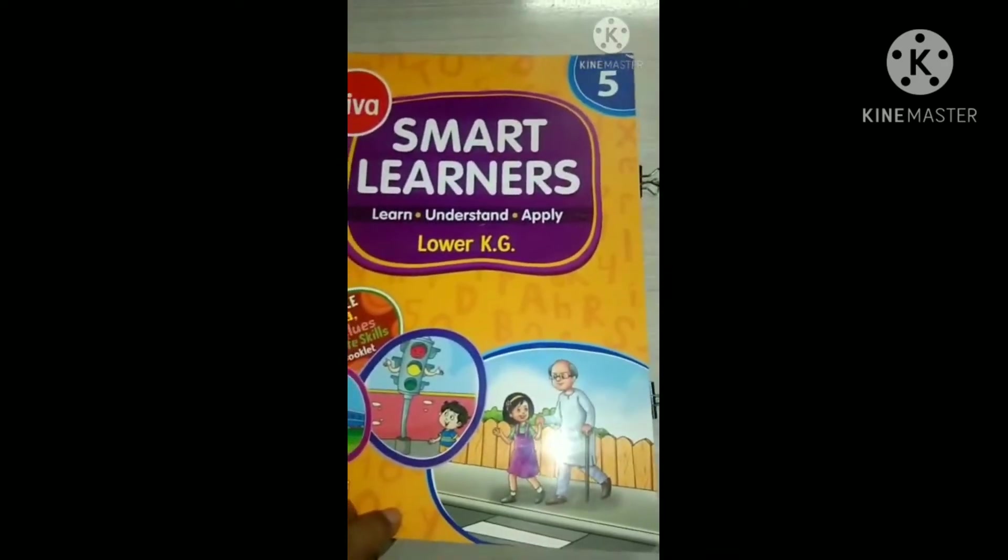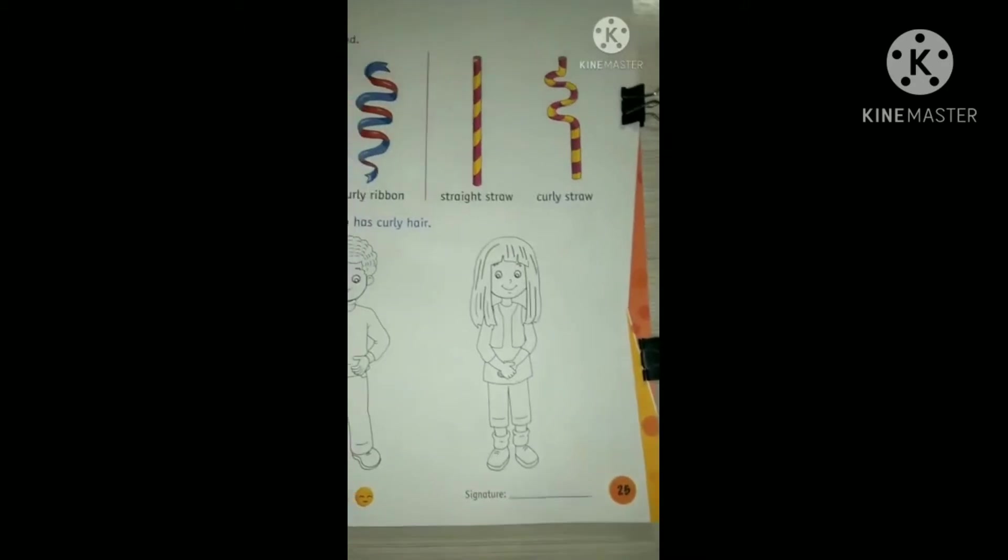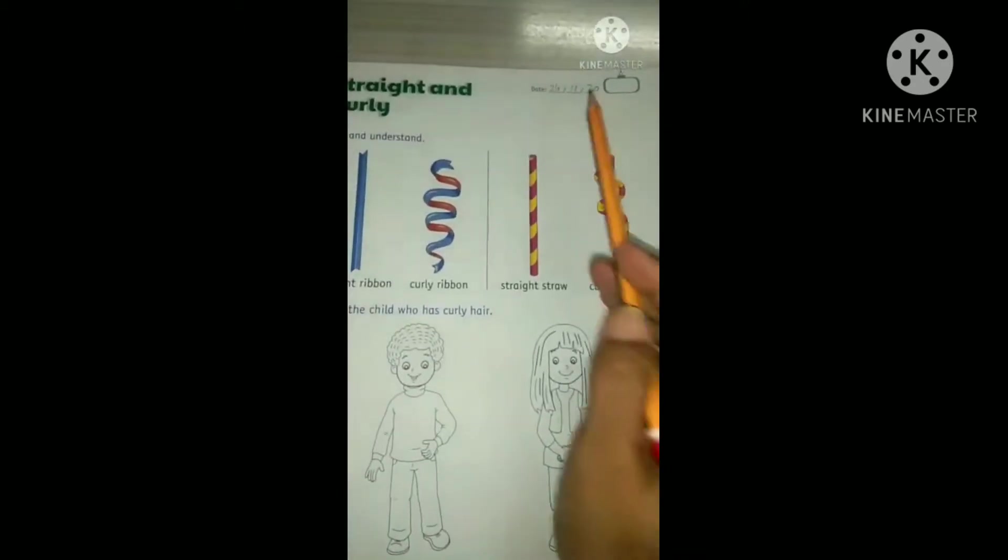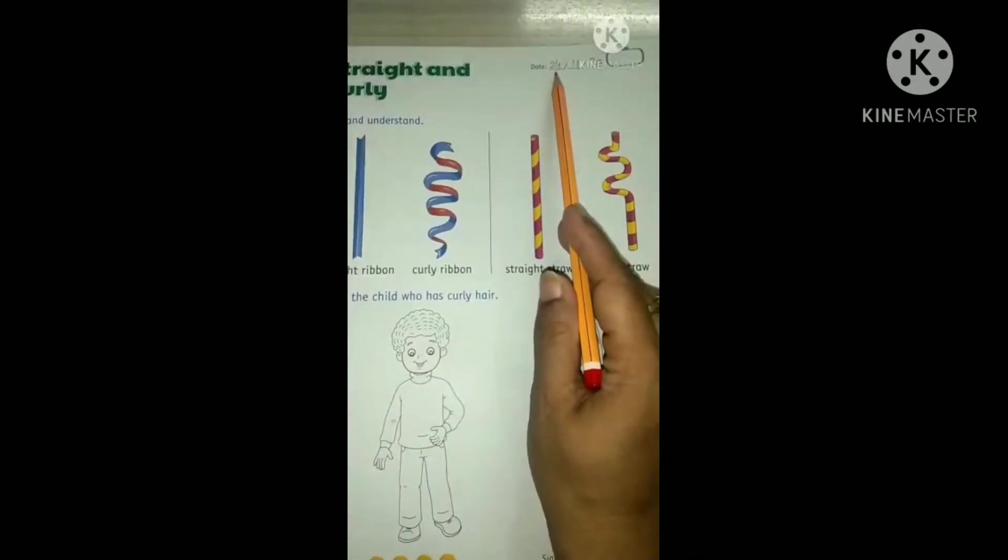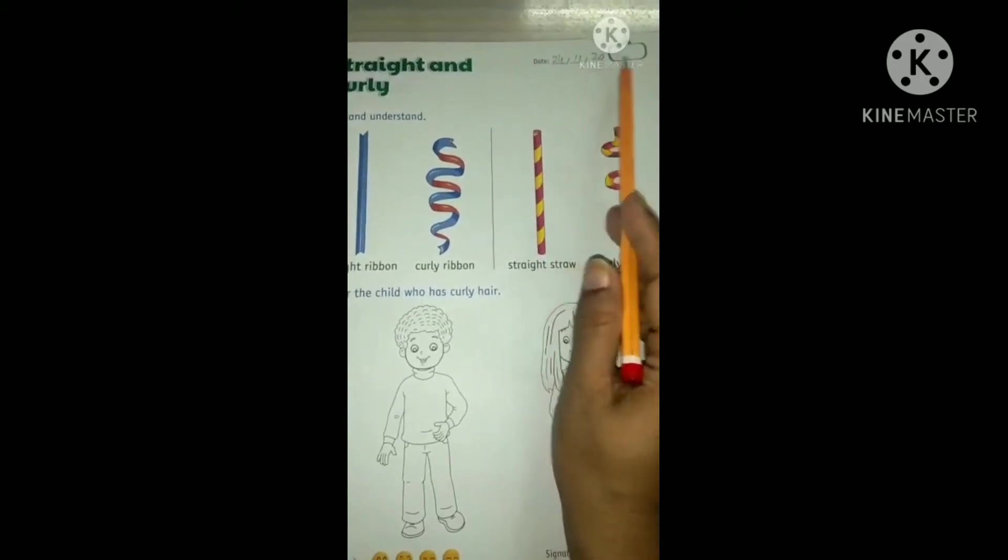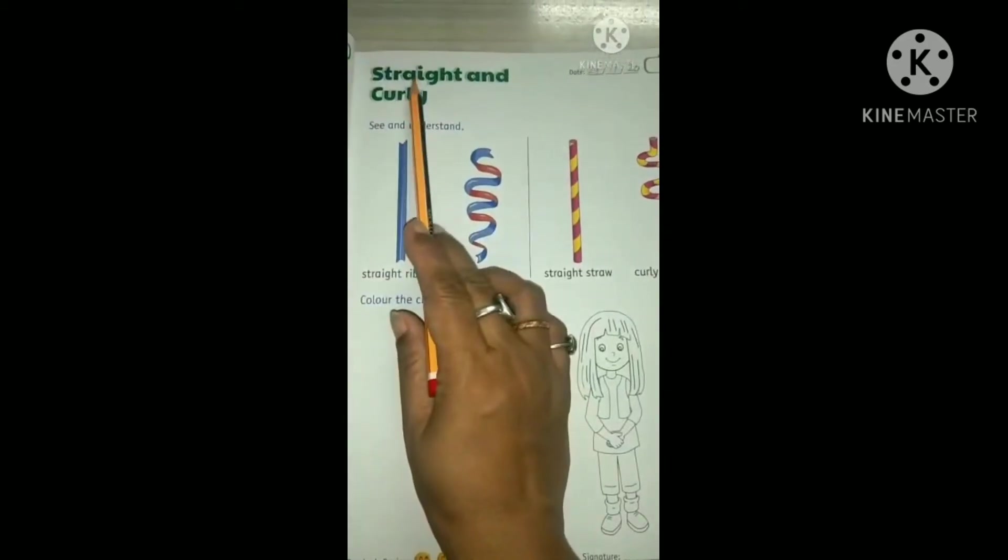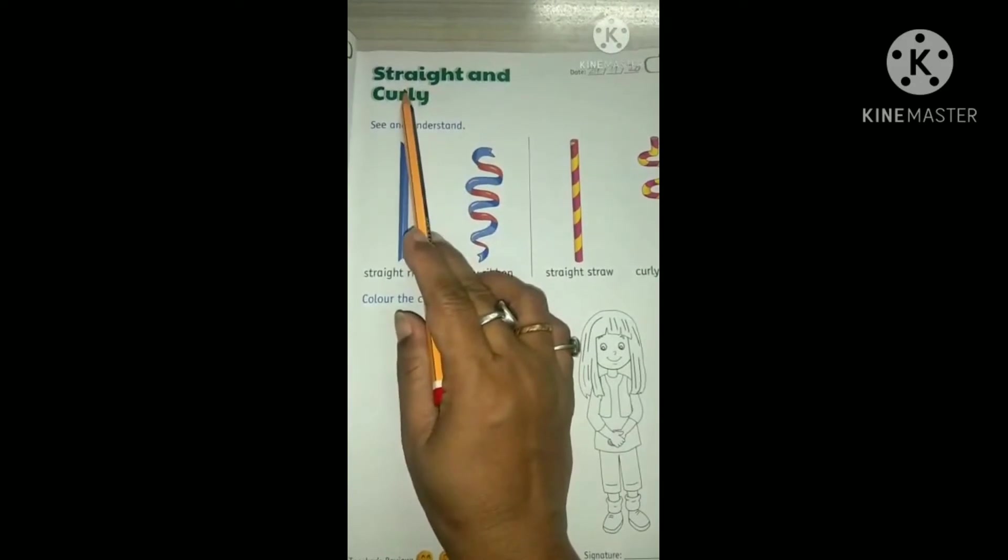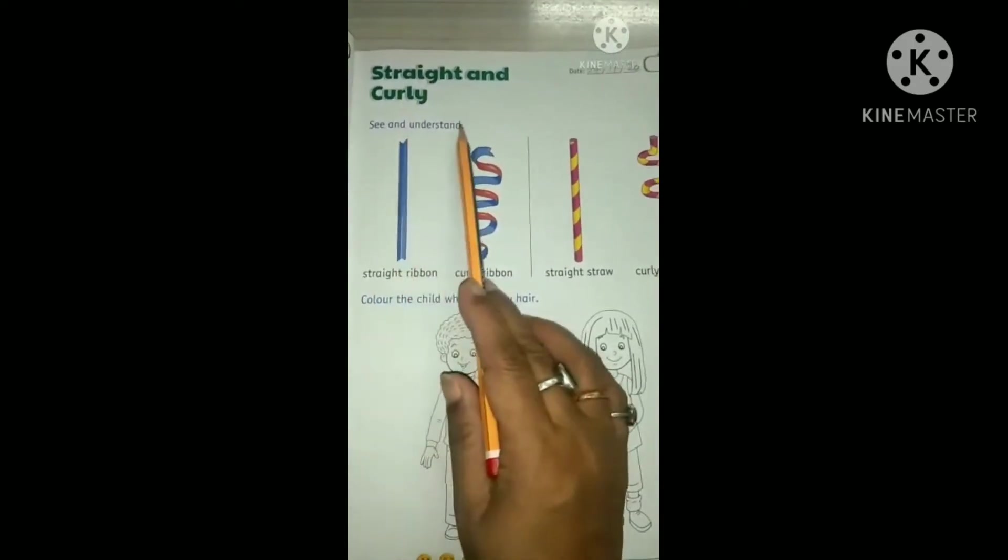See, in book number 5, on page number 25, write down the date first. It is 24th November 20, right? See, straight and curly. See and understand.